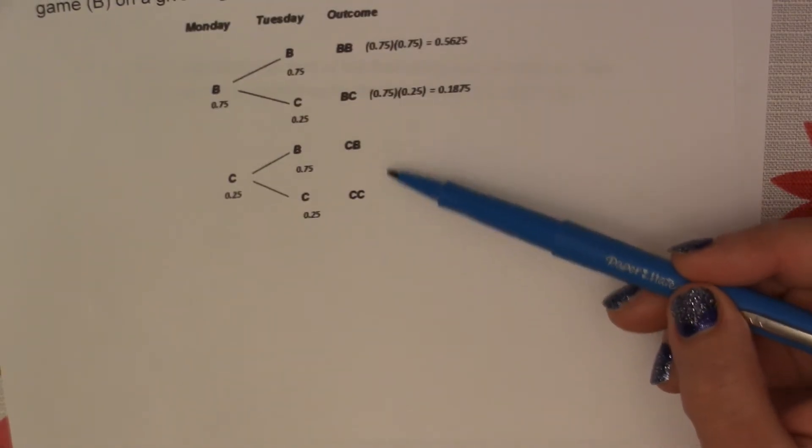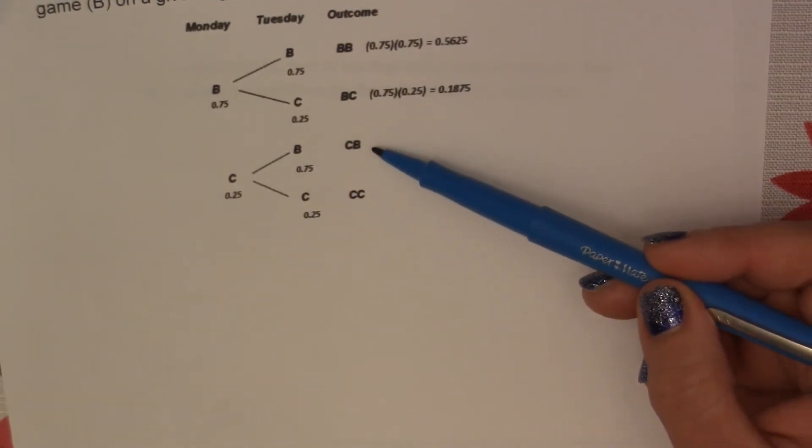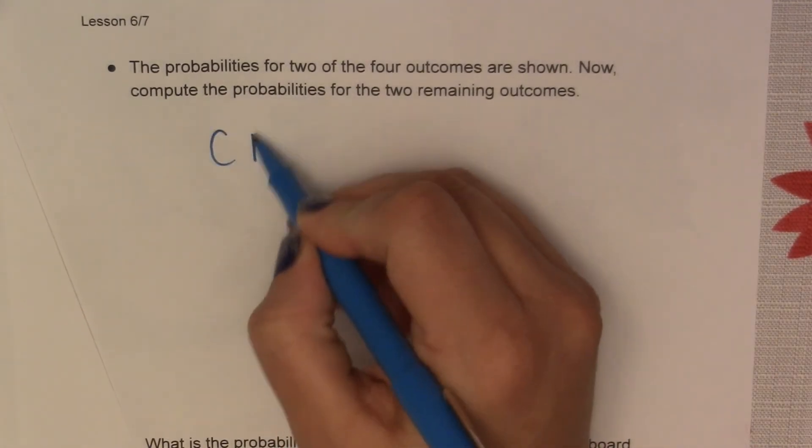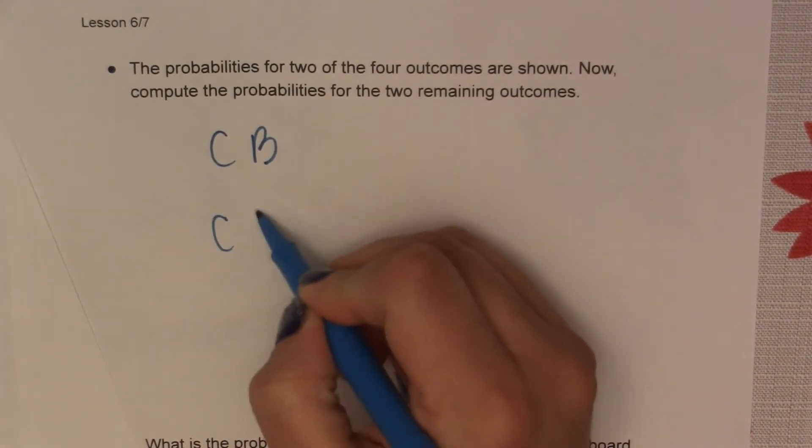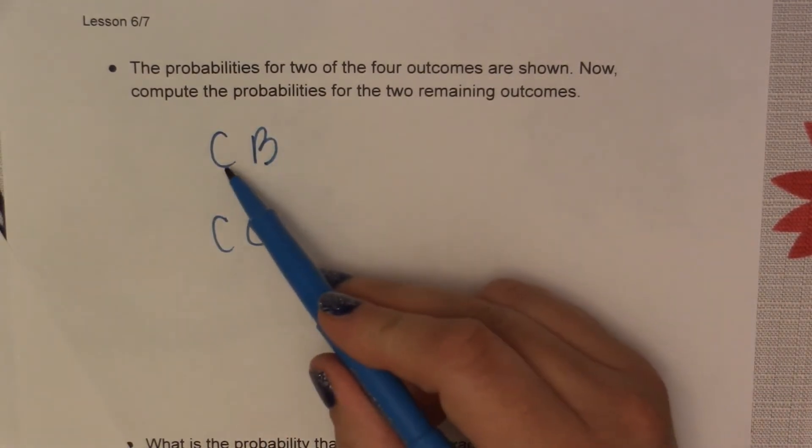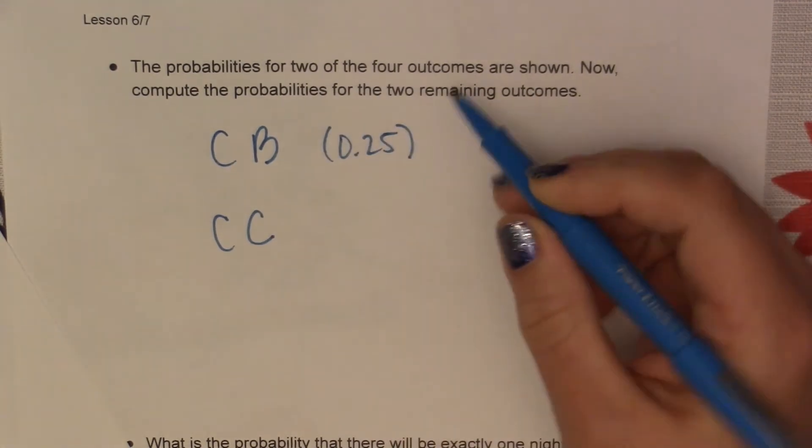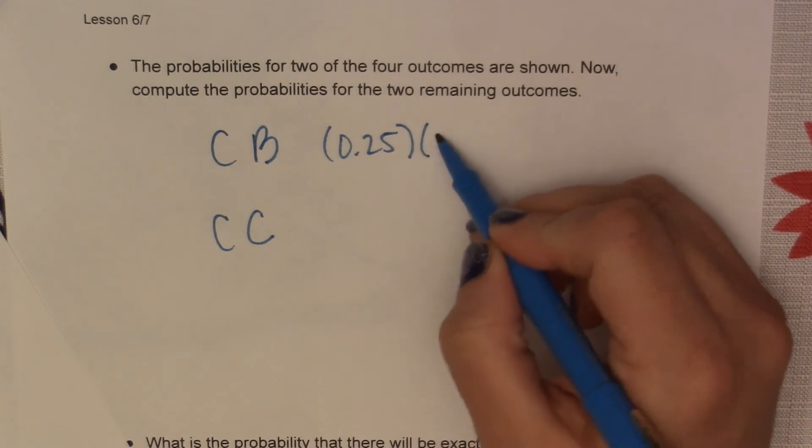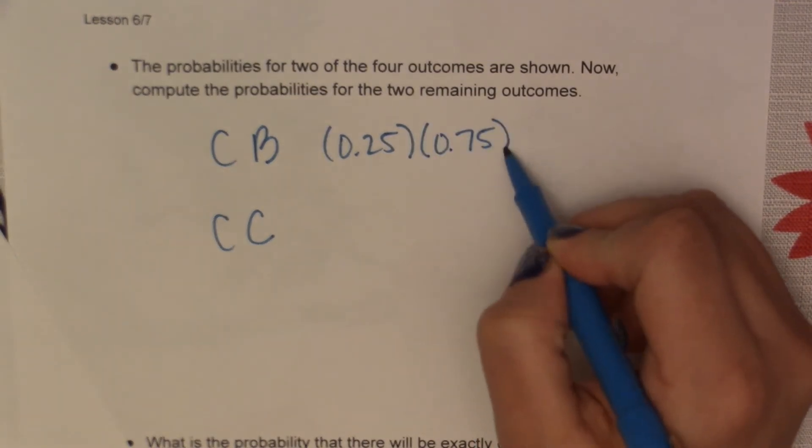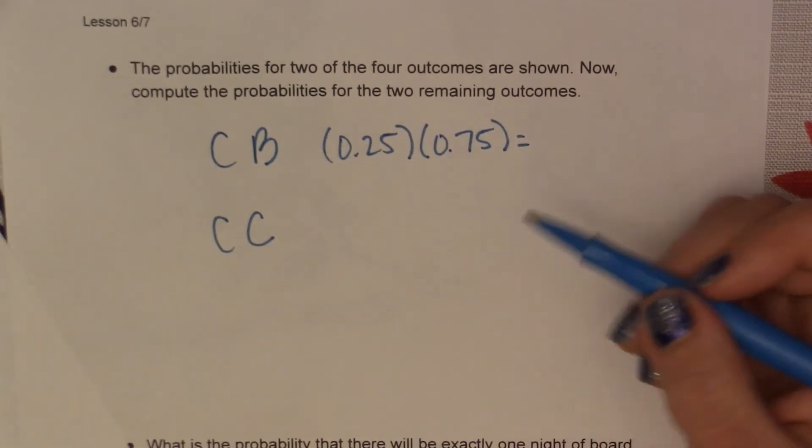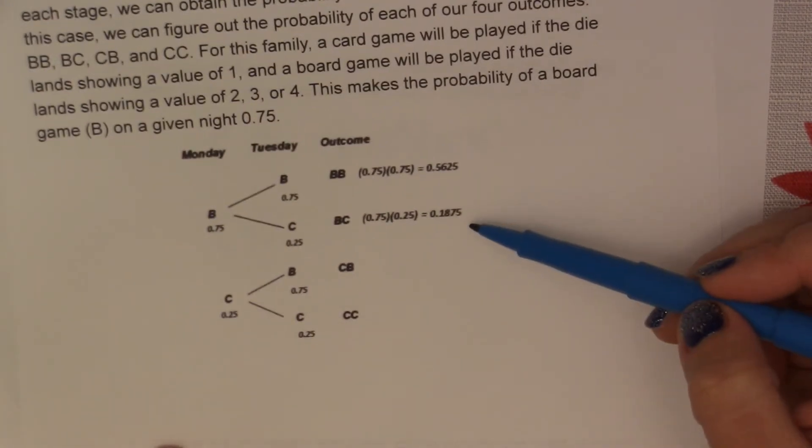So if we go back to our tree, we're going to find the probability of these last two outcomes. So we have CB and CC. So the probability of a card game was 0.25, and the probability of a board game was 0.75, which that multiplication was already done in the table so we know what that equals. So 0.1875.